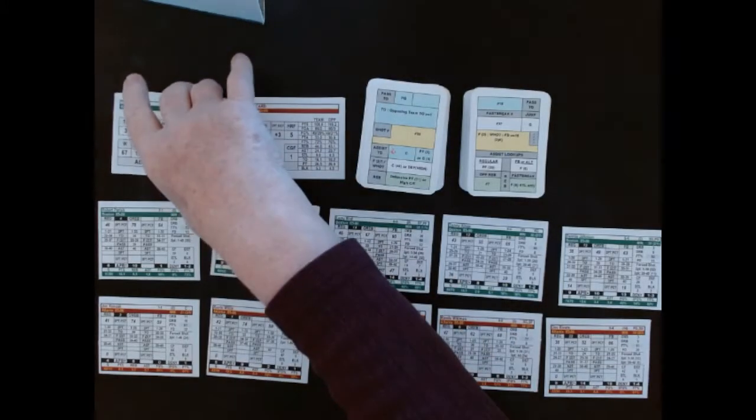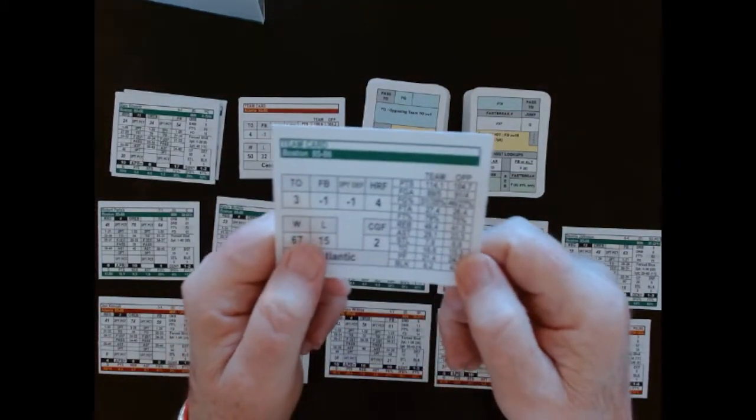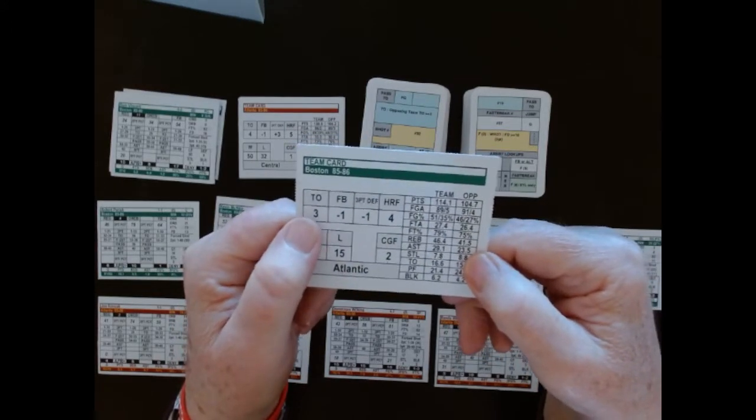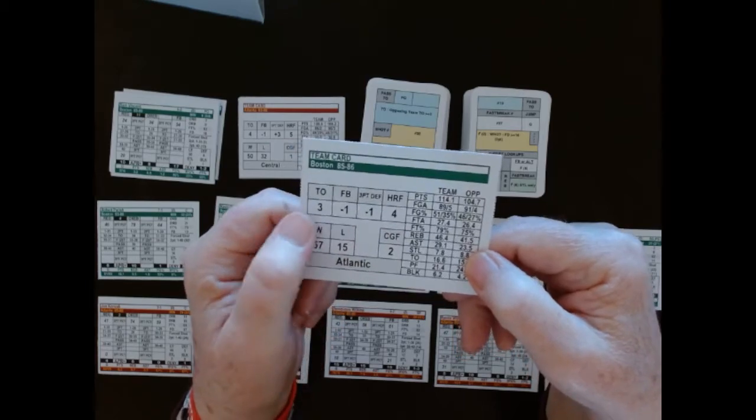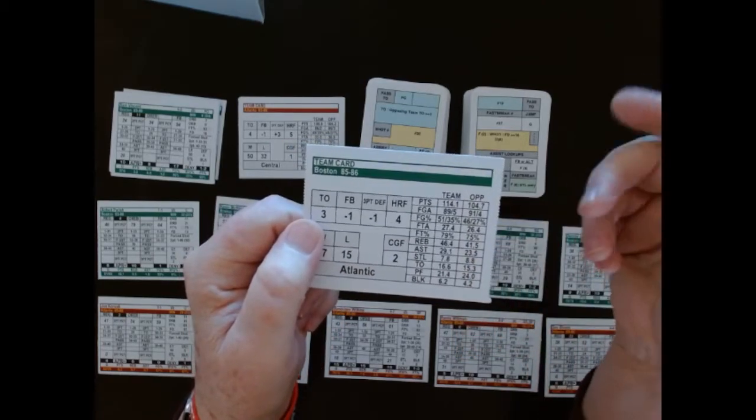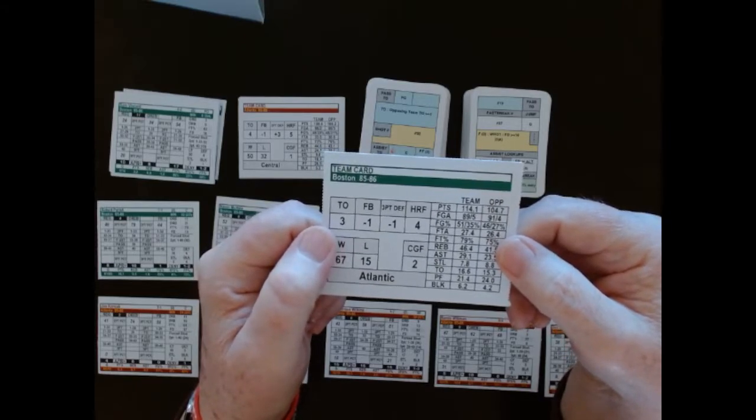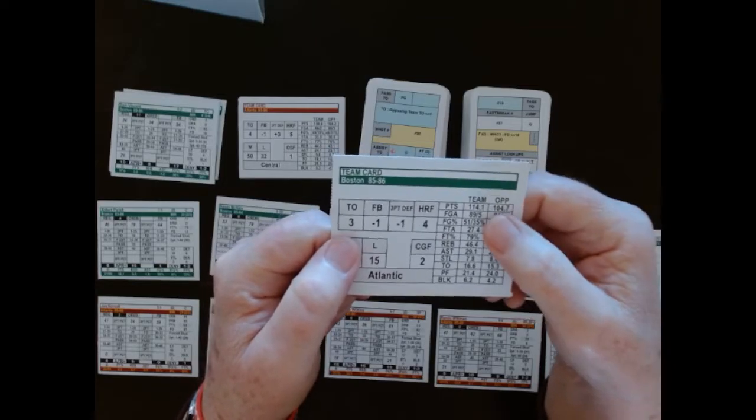Each team has a team card. It's got turnovers, a fast break, three point, and home field advantage. These are numbers that will be applied as a modifier any time there's a turnover request or a fast break or three point, then the wins and losses and so forth, and then their team records.